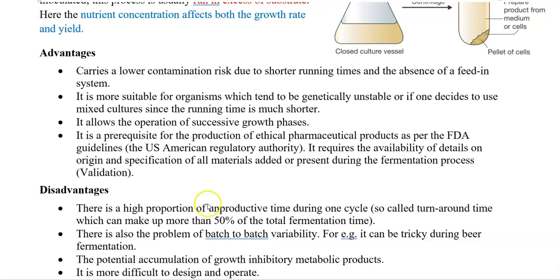It allows the operation of successive growth phases together and allows visualization of various metabolites produced during the different growth phases, as we studied in the previous screencast lecture on different phases of bacterial growth. Batch culture is a pre-requisite for production of ethical pharmaceutical products as per FDA regulations — the US-based regulatory authority — which requires details of the origin and specification of materials added during the fermentation process.